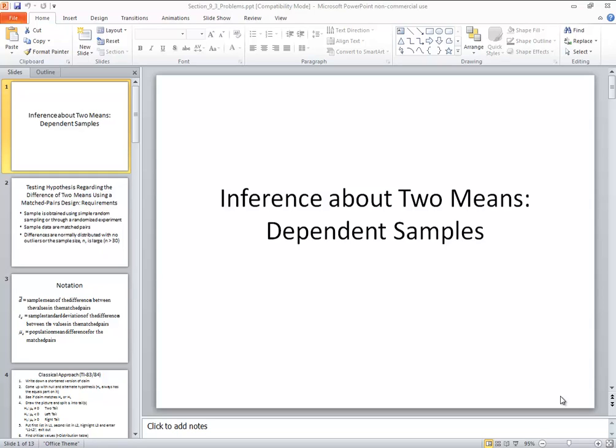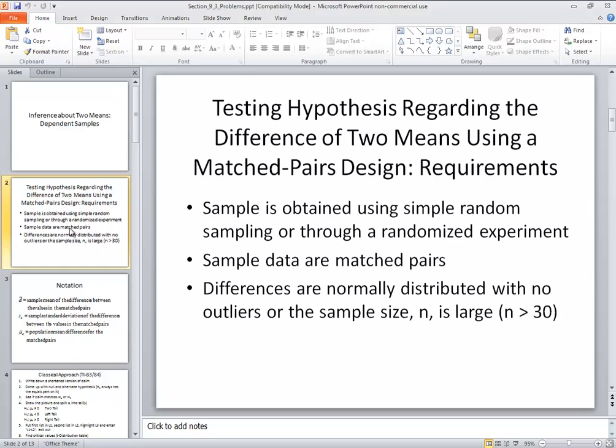Let's take a look at two-means dependent samples, matched pairs as they're sometimes called. Now if we're doing claims regarding the difference of two means using a matched pairs design, then we have some requirements. Samples obtained using simple random sampling or through a randomized experiment. Sample data are matched pairs. Differences are normally distributed with no outliers or the sample size n is large, it is greater than 30.